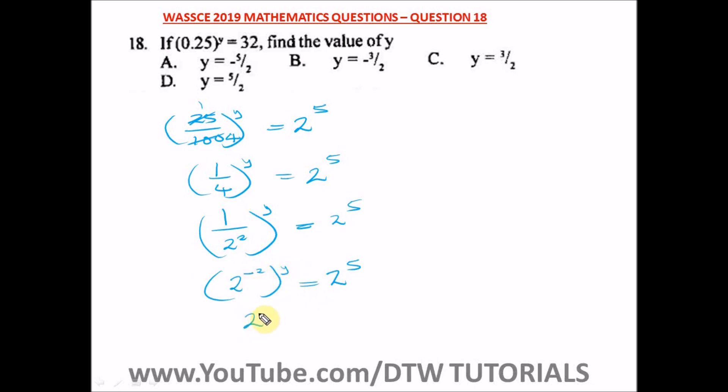We have 2 raised to power minus 2y is equal to 2 raised to power 5. From here it's very easy for us now to cancel out the 2, since we have 2 here and 2 here.